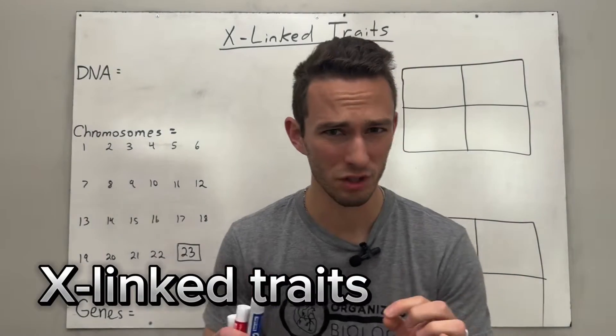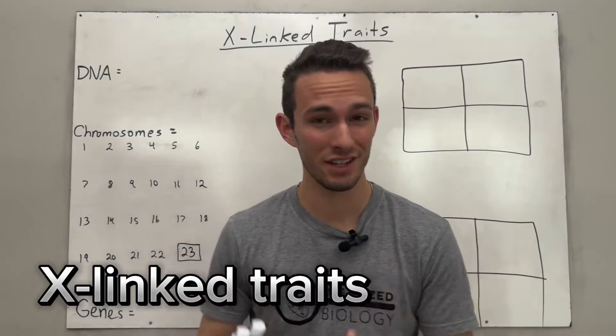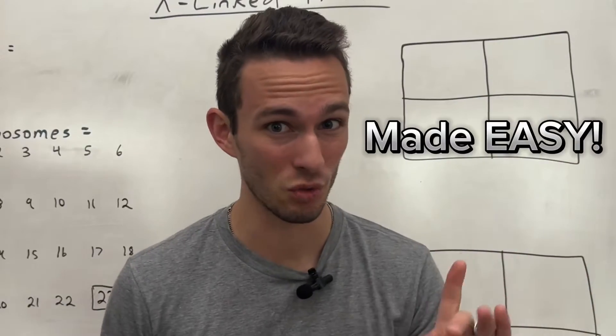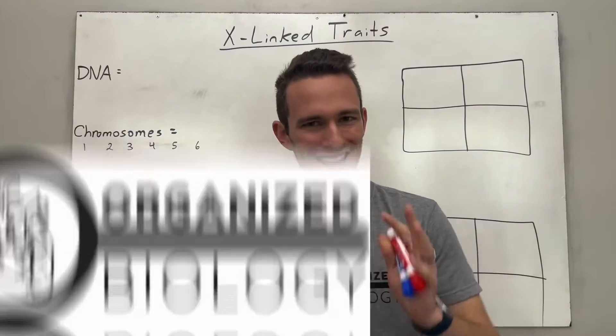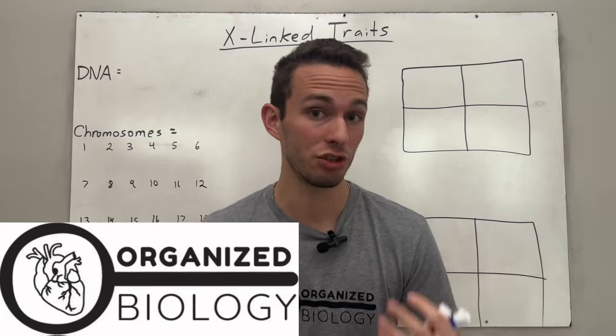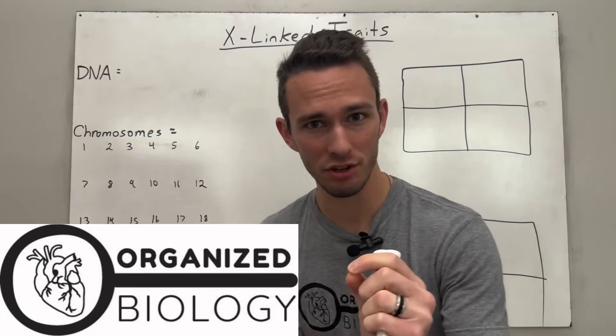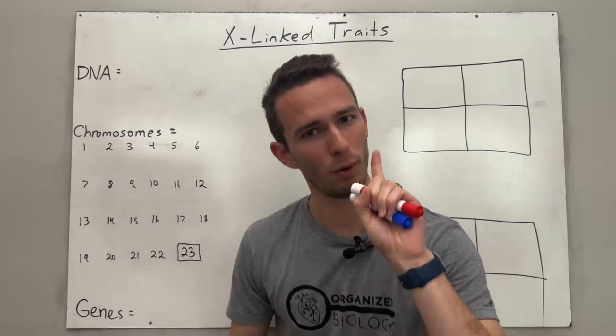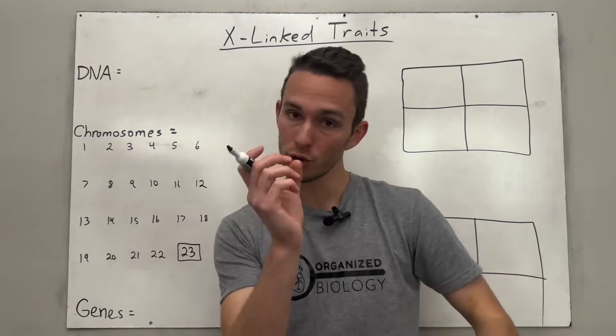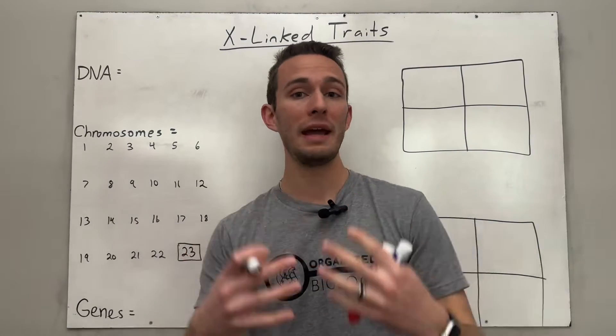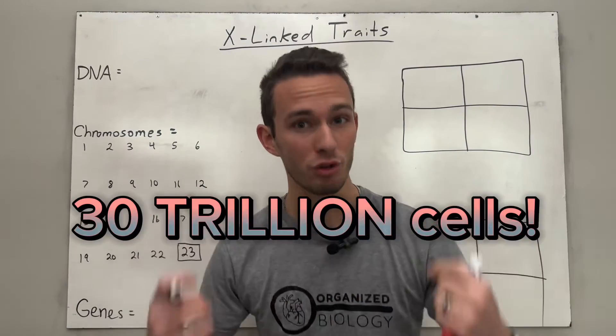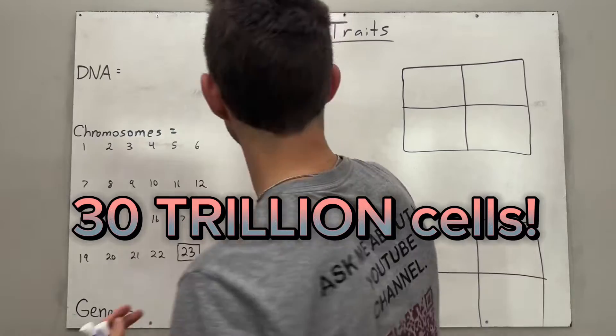X-linked traits were so difficult for me to understand until I learned it this way. To understand X-linked or sex-linked traits, we have to understand a few things. Number one, your body is made of 30 trillion cells.